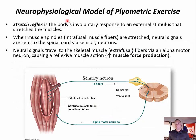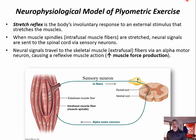The neurophysiological model involves the potentiation of the concentric muscle action by use of what is known as the stretch reflex. The stretch reflex is the body's involuntary response to an external stimulus that stretches the muscle. This reflexive component of plyometric exercise is primarily composed of muscle spindle activity.